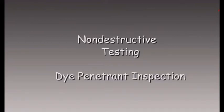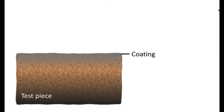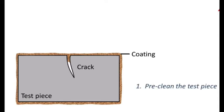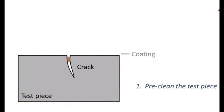Dye penetrant examination is an important method of non-destructive testing of materials. Often the surface of a workpiece is covered with rust or paint, which masks the material defects as shown in the sectional view. Therefore, the first step is always the pre-cleaning of the test piece surface. This must be done very thoroughly so that any defects present — here it is a crack — are open to the surface.